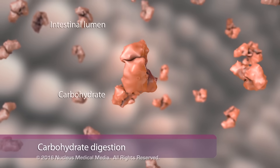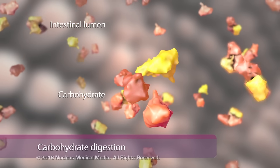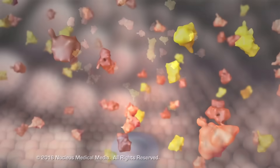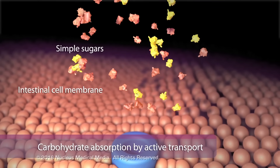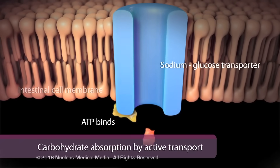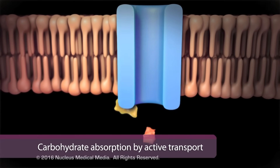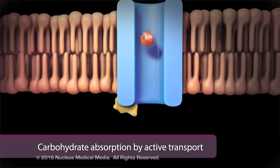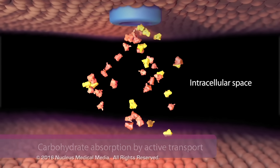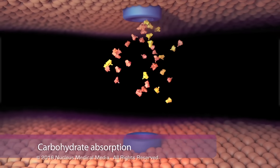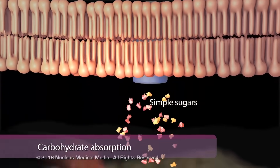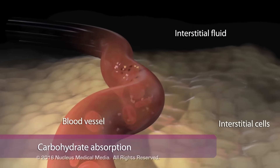Pancreatic enzymes break down carbohydrates into several simple sugars called monosaccharides. Sodium glucose transporters are responsible for transporting monosaccharides across the intestinal cell membrane into the cell using active transport. After transport into the cell, glucose transporters move the monosaccharides out of the cell and eventually into the bloodstream for use by the body.